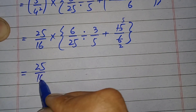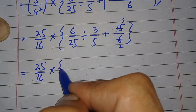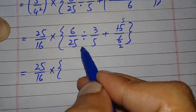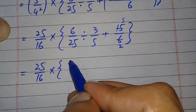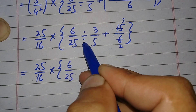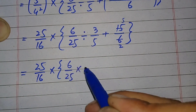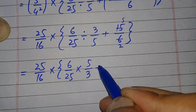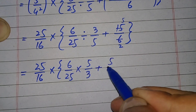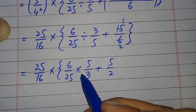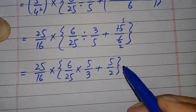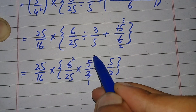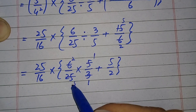Now it becomes 25 by 16, multiply, braces open. To divide these two fractions, we write the first fraction as 6 by 25, change division to multiplication, and reverse the second fraction so it becomes 5 by 3, plus 5 by 2. Now we will simplify these fractions with each other: 3 times 1 is 3, 3 times 2 is 6; 5 times 1 is 5, 5 times 5 is 25.